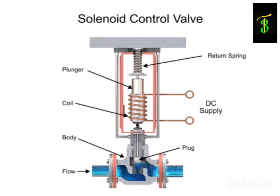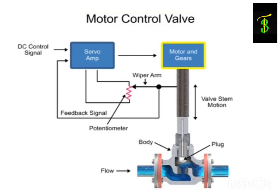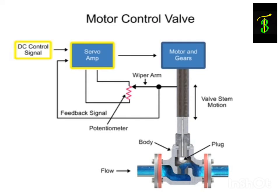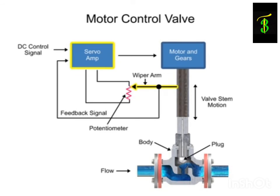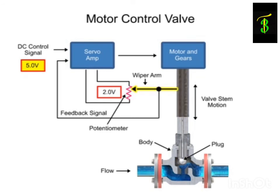Another method for variable valve positioning uses a motor and is referred to as proportional control mode. Using a gear motor attached to the valve stem, a servo amplifier provides a DC control signal that moves the valve to the desired position. Feedback is achieved with a wiper arm attached to the valve stem that sends a signal back to the servo amplifier where the position is monitored. The servo amplifier drives the motor until the control signal is equal to the feedback signal.